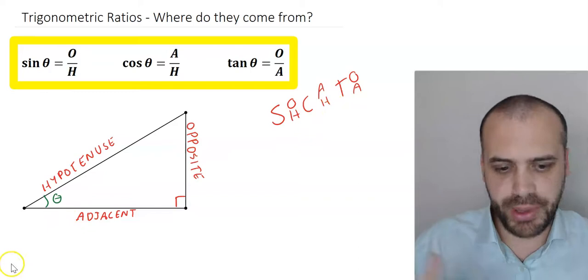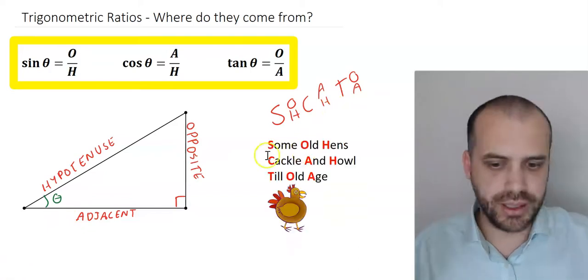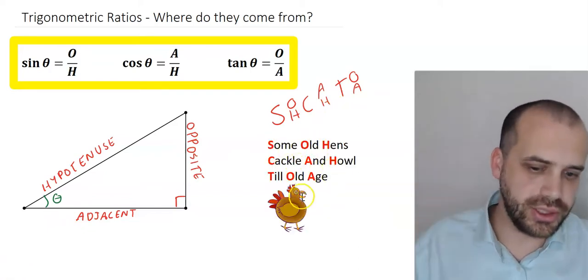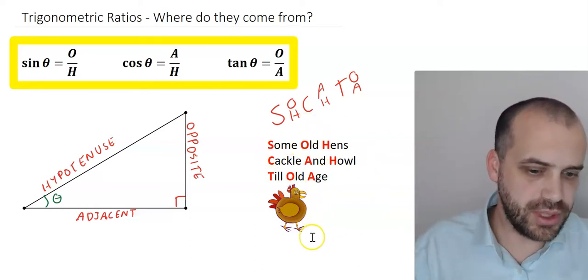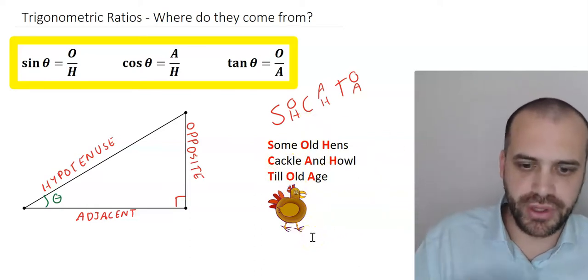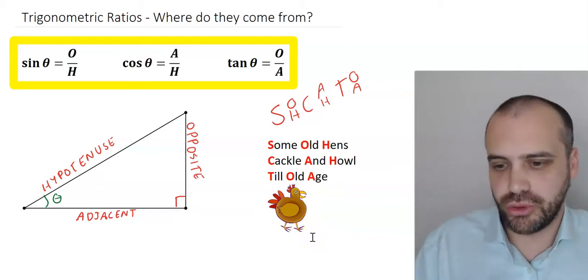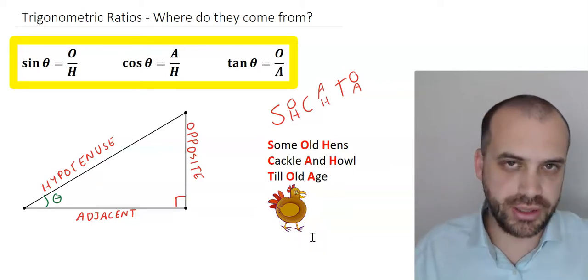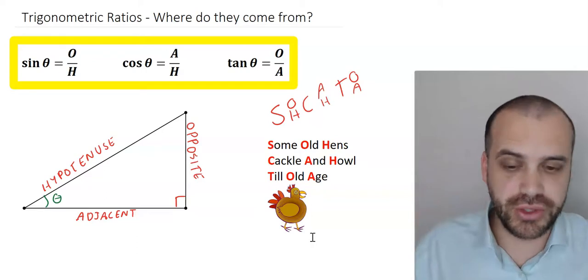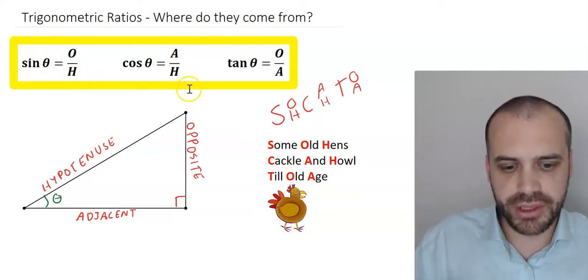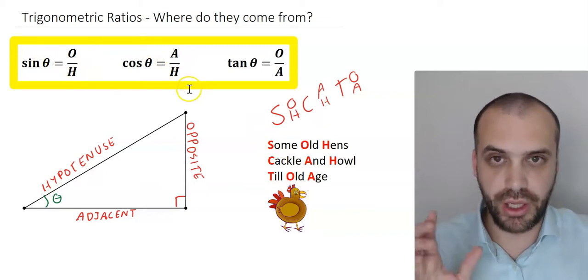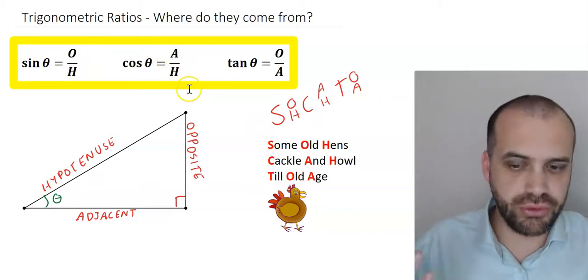Or the other one that people use is something like 'some old hens cackle and howl till old age.' This is called a mnemonic. It's a device for remembering something. And there are hundreds of these SOHCAHTOA or trigonometric ratio mnemonics out there. You can google it. You can find your favourite. It's important that you remember these three formulas because we use them a lot. That's what a trig ratio is.